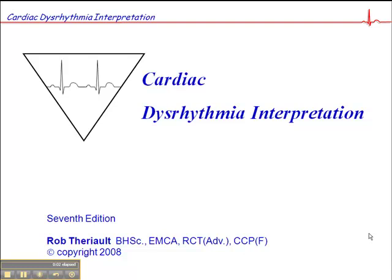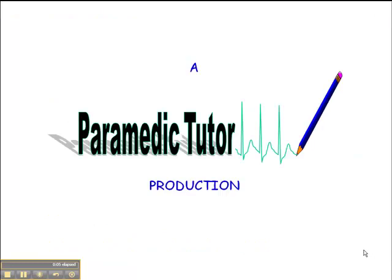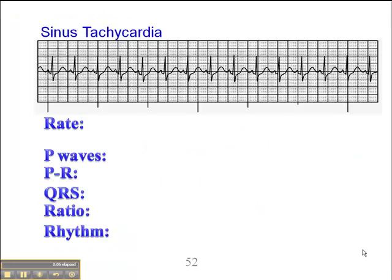This next rhythm is on page 52 of the Cardiac Dysrhythmia Interpretation Workbook, and it is a sinus tachycardia. Like a sinus brady, the only difference really between a sinus tach and a normal sinus rhythm is the fact that the heart rate is 100 or greater.